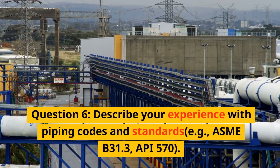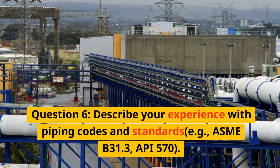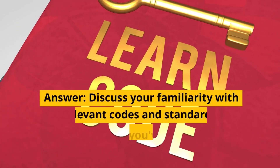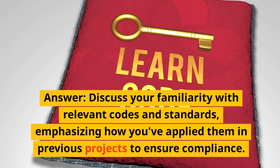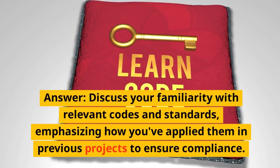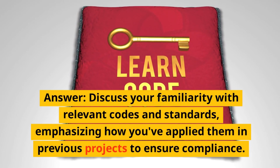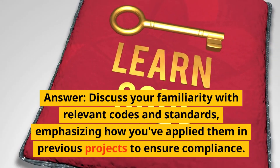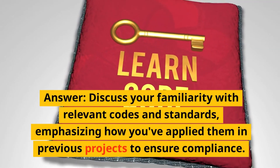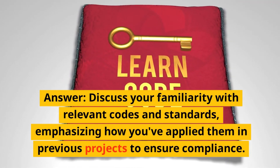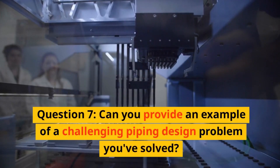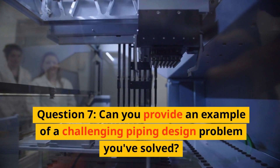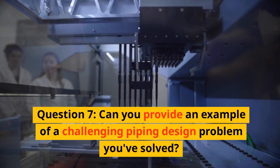Question six: Describe your experience with piping codes and standards, for example ASME B31.3 and API 570. Answer: Discuss your familiarity with relevant codes and standards, emphasizing how you have applied them in previous projects to ensure compliance.